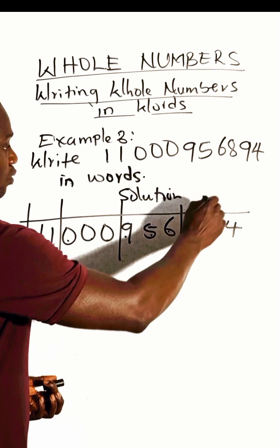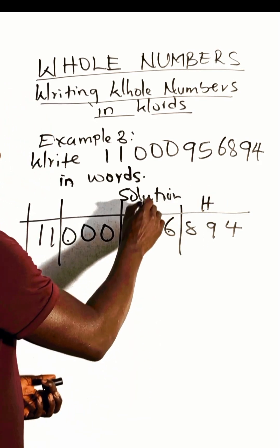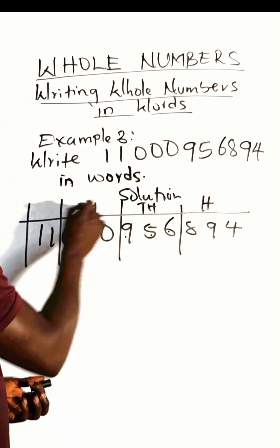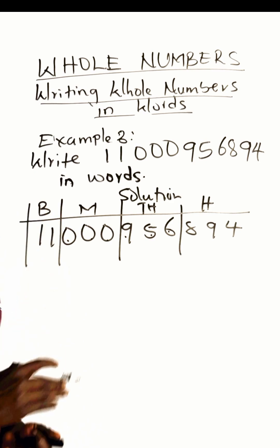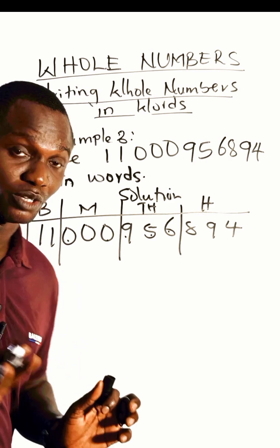Now let's name our groups. This is our hundred group, the thousand group, the million group, and the billion group. So the highest place value group is billion, so we start reading this number from the billions down to hundreds.